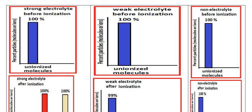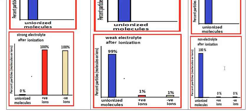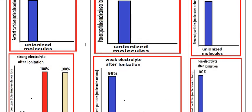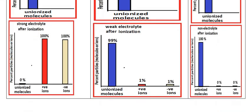For the non-electrolyte, before dissolution all molecules are unionized, and after dissolution the situation is the same — all molecules are present as 100% unionized molecules, with zero ions, zero positive and zero negative. These graphs are good representations of the concepts of strong electrolytes, weak electrolytes, and non-electrolytes. I hope you understand the types of solutions according to the conduction of electricity. Thank you for listening and goodbye.